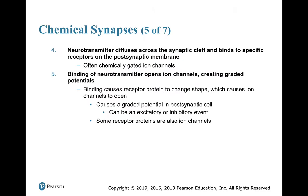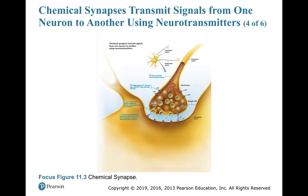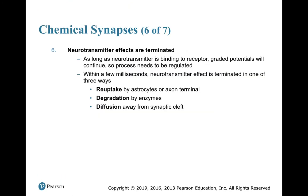The neurotransmitters diffuse across the synaptic cleft and bind to receptors on the postsynaptic neuron membrane — usually chemically-gated ion channels on the dendrites or cell body. Binding causes the receptor protein to change shape, opening ion channels and creating graded potentials. These potentials can be excitatory, making the membrane less negative, or inhibitory, making it more negative, and are limited to that local area.